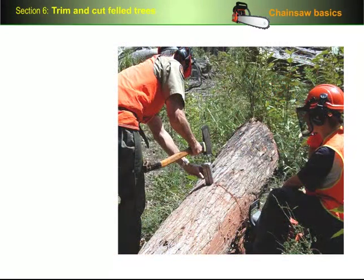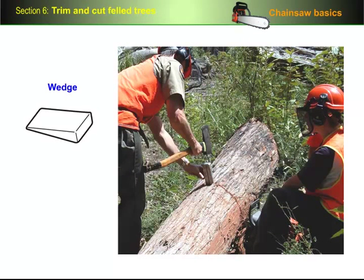And if you ever do find that the cut is closing up on the bar, the safest way to get out of trouble is to use a wedge. Put the chainbrake on, tap the wedge into the cut, and then pull the saw out once it's free.